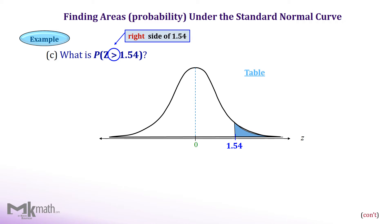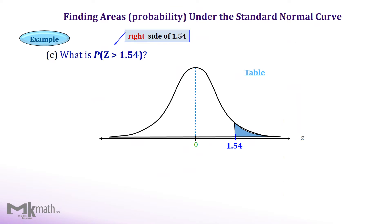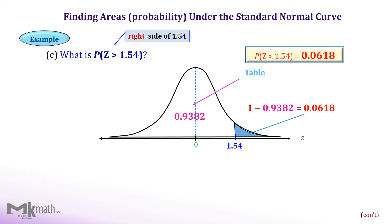Let's look up the table using 1.54. We need to find the left cumulative area to z equal 1.54. First, locate the first two digits of z-score as 1.5, and then locate the second decimal place of 4 from the top row. The intersection of those values is the left cumulative area to z equal 1.54, which is 0.9382. However, our desired area is to the right of z equal 1.54. Since the whole area under the normal curve is 1, we subtract the left area from 1 to get the right area. So the area to the right of z equal 1.54 is 0.0618.